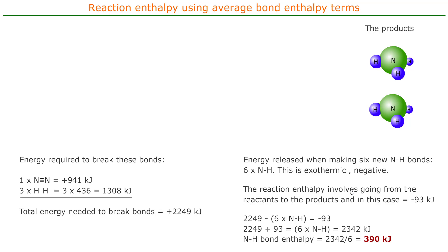We bring the 93 to the right-hand side, and it becomes plus 93. And that equals, take the negative six times nitrogen-hydrogen to the right-hand side, it becomes six times nitrogen-hydrogen positive. And so our sum here becomes 2249 plus 93, which gives 2342, and then divide by six will give the bond enthalpy of the nitrogen-hydrogen bond, which is 390 kilojoules.